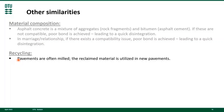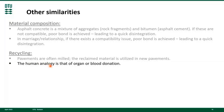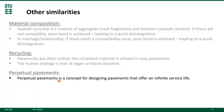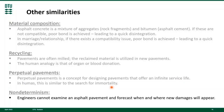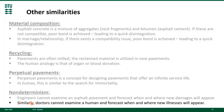Recycling: pavements are often milled, and the reclaimed material is utilized in new pavements. The human analogy is that of organ or blood donation. Perpetual pavements is a concept for designing pavements that offer an infinite surface life — in humans, this is similar to the search for immortality. Non-determinism: engineers cannot examine an asphalt pavement and forecast when and where new damages will appear. Similarly, doctors cannot examine a human and forecast when and where new illnesses will appear.